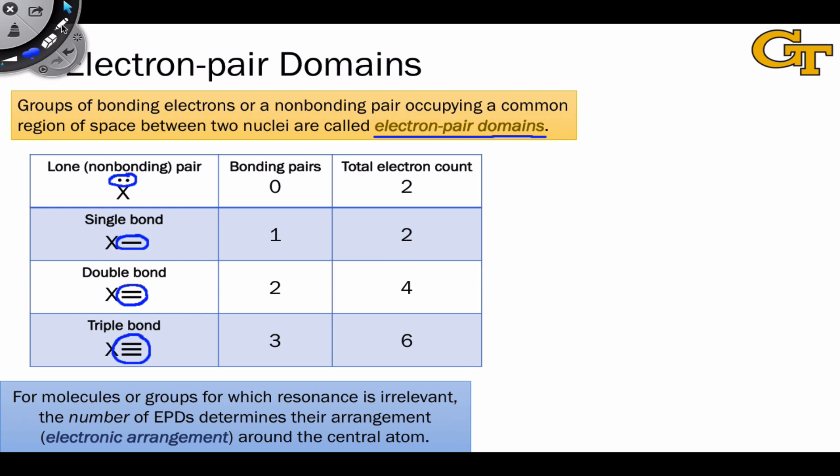The beautiful thing about this concept is that for molecules or groups for which resonance is irrelevant—and this is an important condition—the number of electron pair domains, or EPDs around an atom, determines their arrangement around that atom. We give a name to that particular arrangement of electron pair domains: the electronic arrangement. This is somewhat different than the geometry or shape.